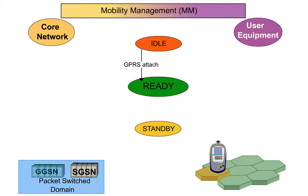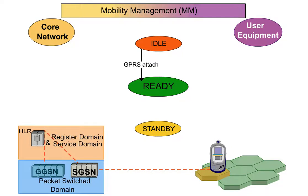Now, the user equipment has been recognised by the network and can send as well as receive data. Cell and routing area updates are also performed in this state.